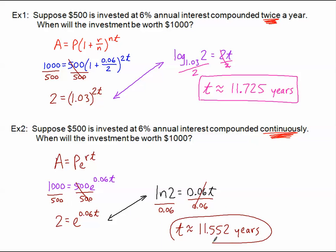So a little bit faster, yeah, maybe a couple months. When we're compounding continuously, our money will double just a little bit faster than if we were compounding twice per year.